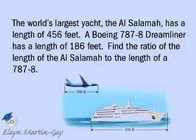The world's largest yacht, the Al Salamah, has a length of 456 feet. A Boeing 787-8 Dreamliner has a length of 186 feet. Find the ratio of the length of the Al Salamah to the length of a 787-8.